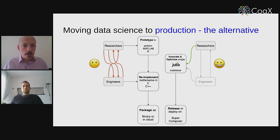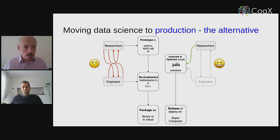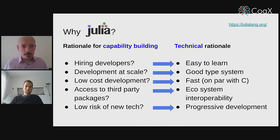There is an alternative, which is the Julia language. Julia is something that researchers and engineers can work on together — they can work on a single codebase, still innovate and quickly get a prototype out, and have something which is then pretty close to being moved into production straight away. So you don't necessarily need a second team of engineers at all. You can make do with one team — it takes out an entire step of the process.